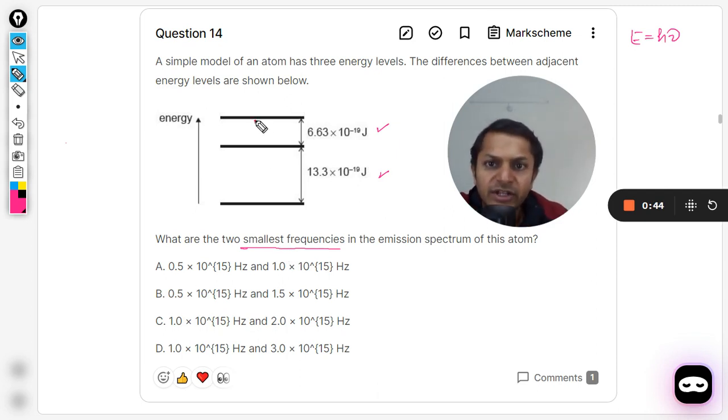There is a third possibility also that electron is jumping from the third level to the first level, but again the gap of energy will be really very big so the frequency will be higher for that. But we want to have the two smallest, so this is going to be the smallest, then this, and then the third one. But we want to find the last two, so one is this, another is this.